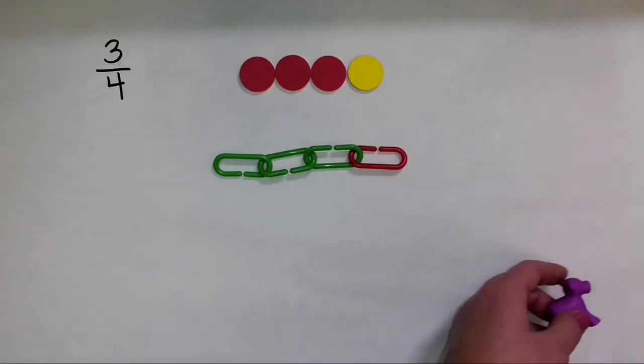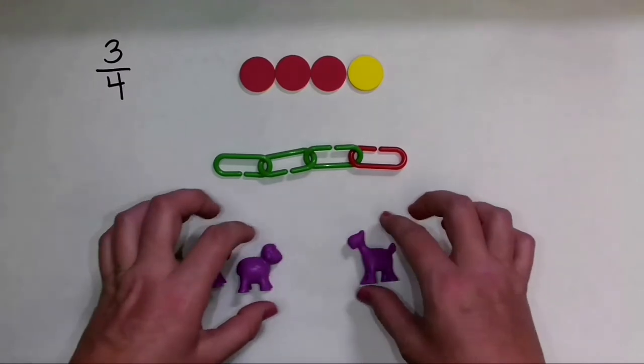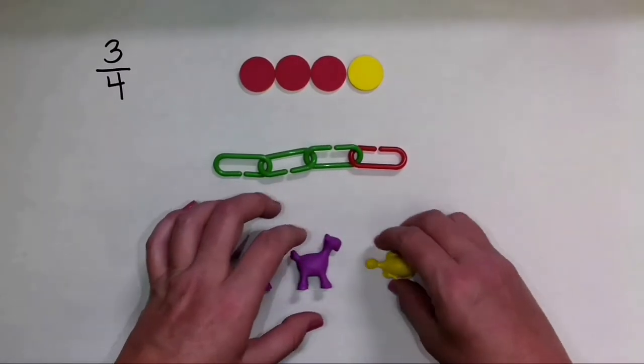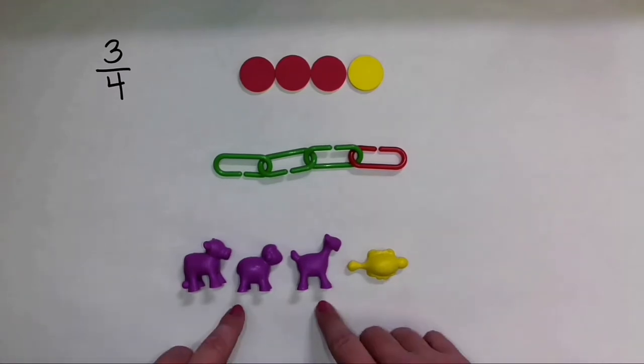But then you can also use any set of objects. Let's say I've got some of these little cute animals here, all right? So I've got three purple animals and one yellow animal. So 3/4 of the animals are purple.